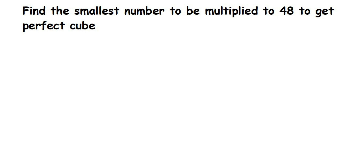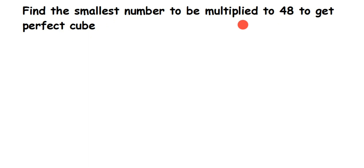Here's a question on cubes: find the smallest number to be multiplied to 48 to get a perfect cube. So 48 is not a perfect cube and we have to make it a perfect cube. Whenever they ask you the smallest number to be multiplied or divided, you have to use the prime factorization method.